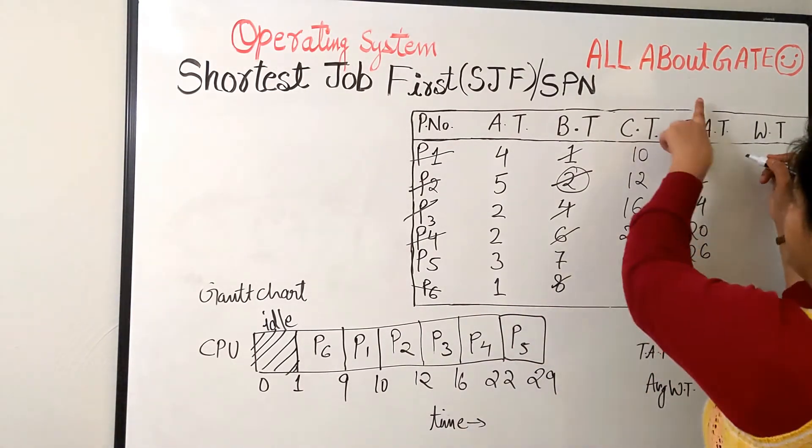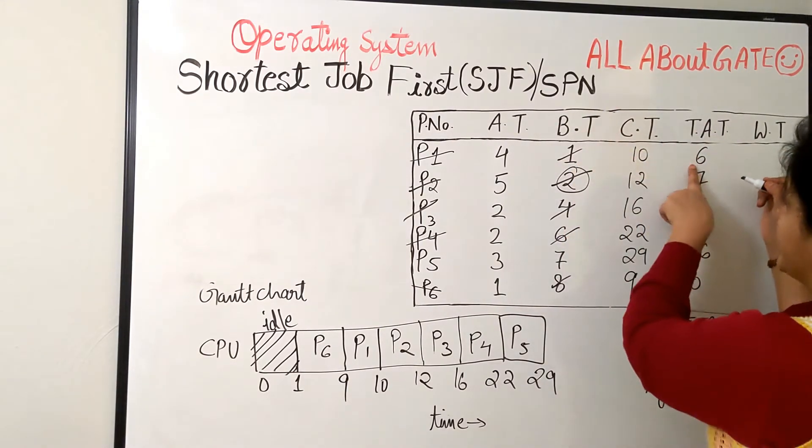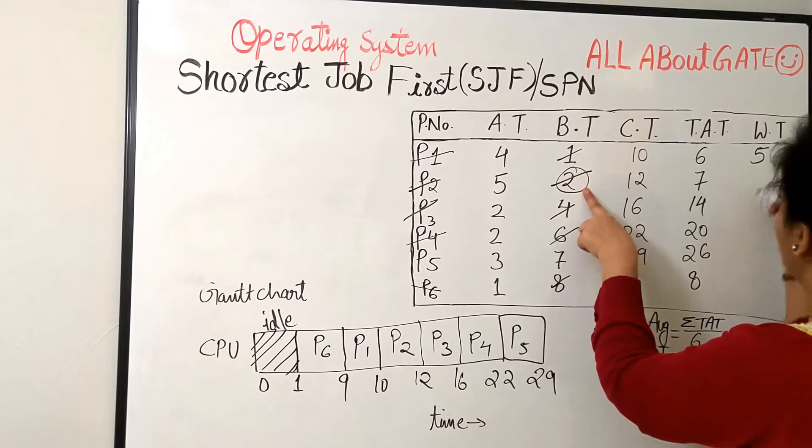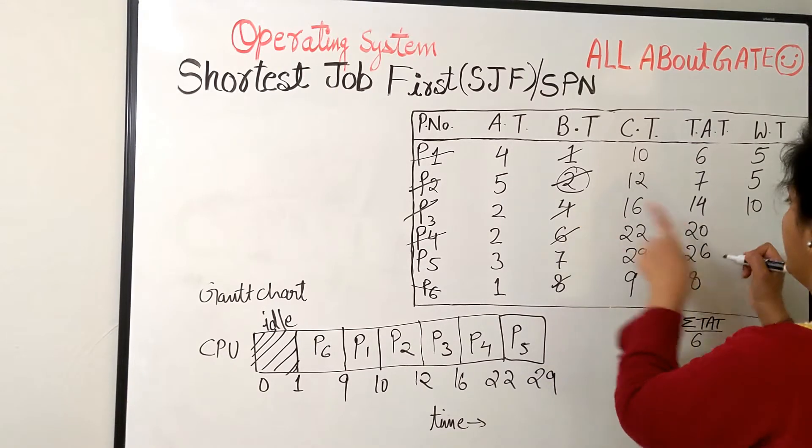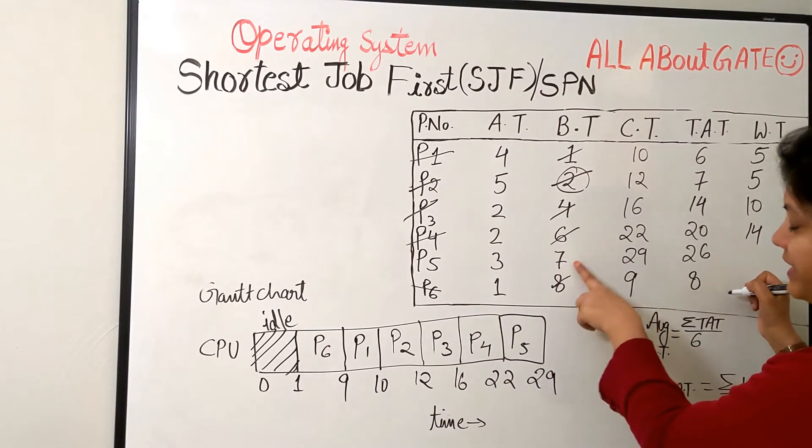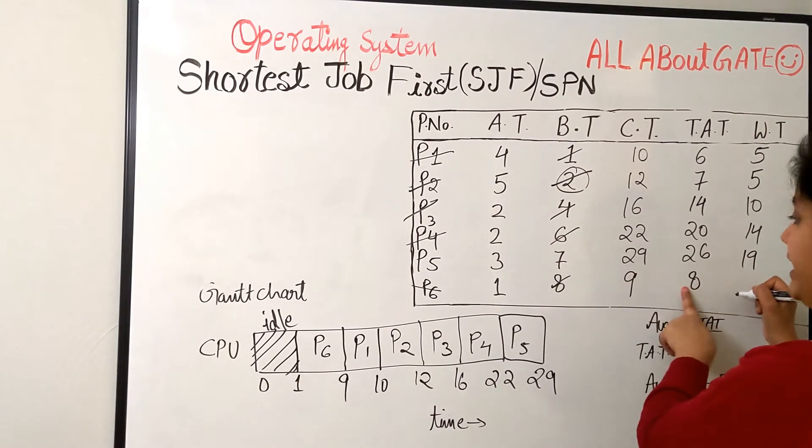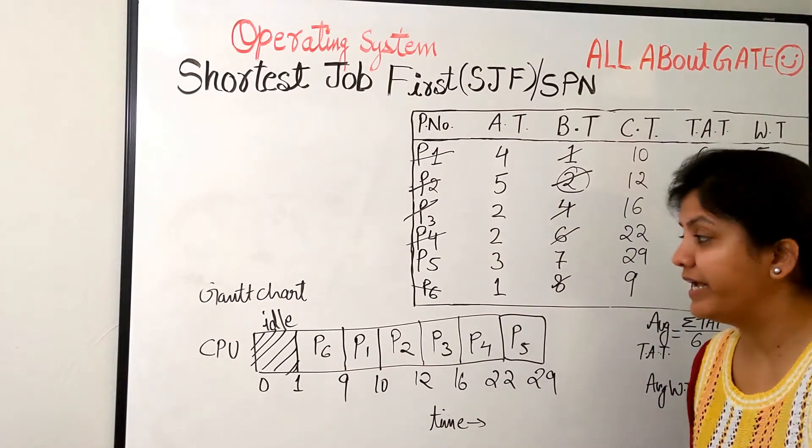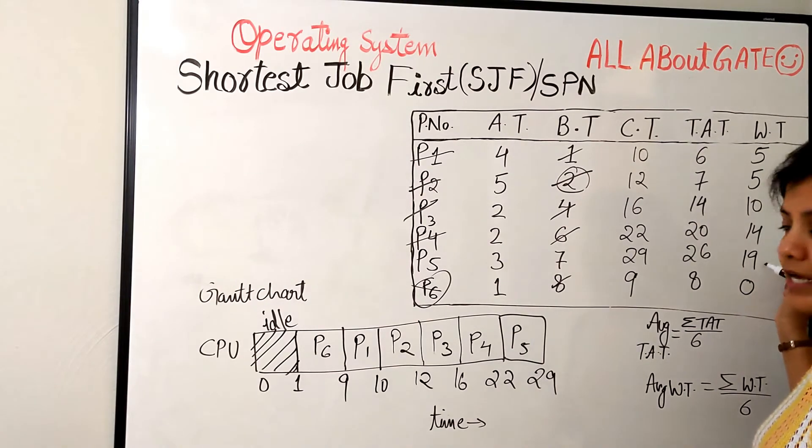Now the waiting time. Nothing but turnaround time minus the burst time. Turnaround minus burst. So 6 minus 1, 5. 7 minus 2, 5. 14 minus 4, 10. 20 minus 6, 14. 26 minus 7, 19. 8 minus 8, 0. The only process who doesn't have to wait is process 6. The rest all have to make their waiting.